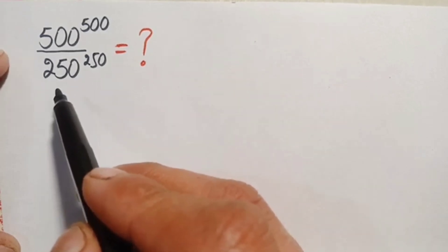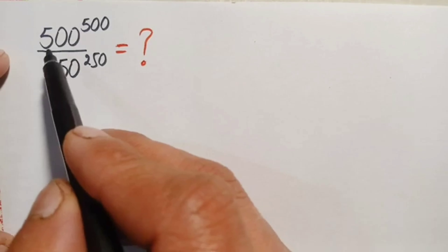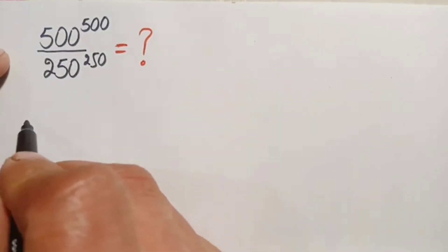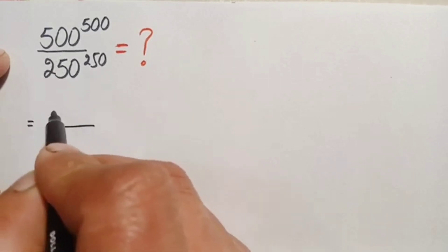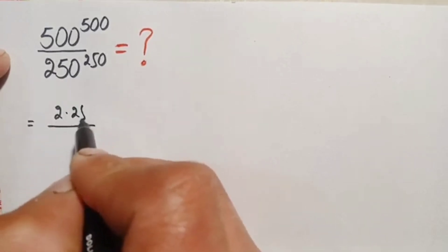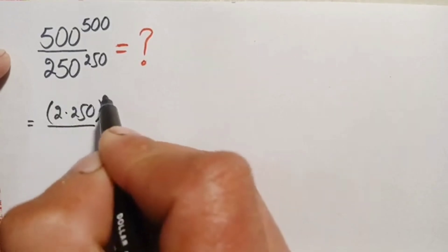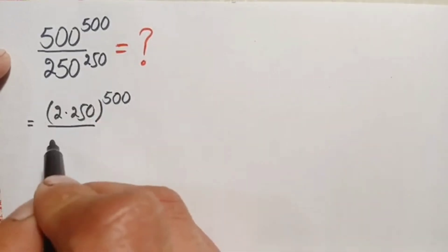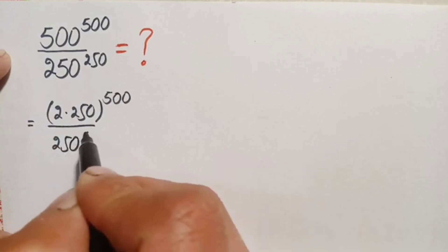In the first method, we will factorize the number 500. So 500 can be written as 2 times 250, giving us 2 times 250, all raised to the power 500, divided by 250 raised to the power 250.